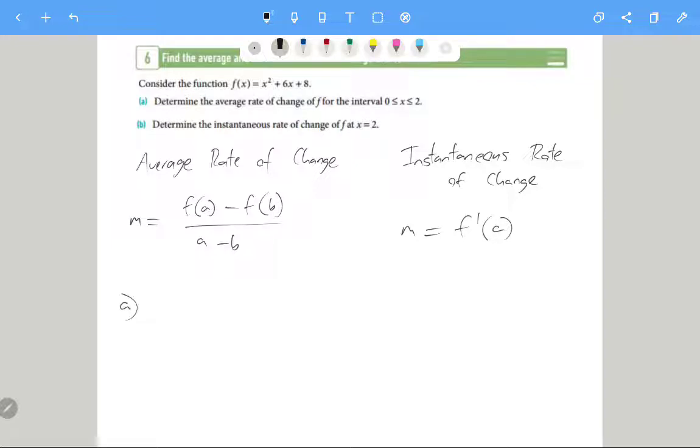So part a, determine the average rate of change of f for the interval zero to two. So first of all, we need to work out the values of f of zero and f of two. So it's gonna be zero squared plus six times zero plus eight, which is eight.